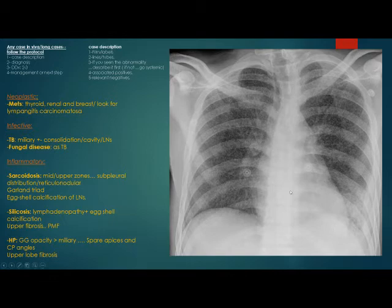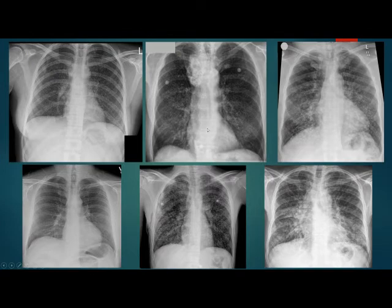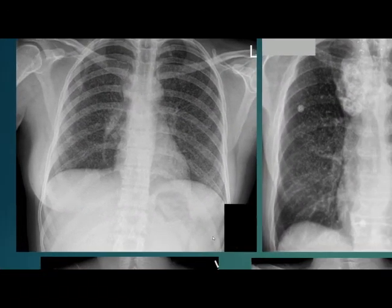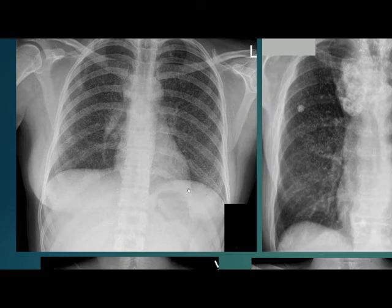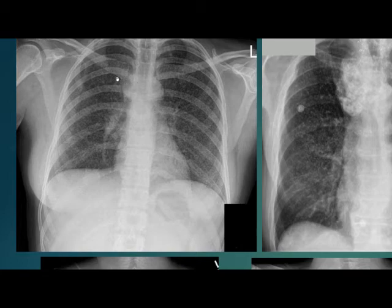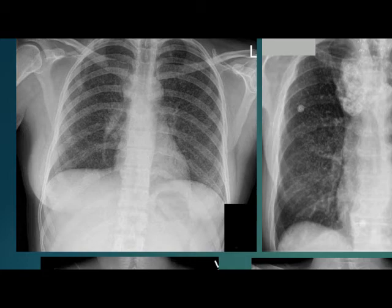Now let us see some examples. In this first image, we can see the miliary pattern. There is a mastectomy of the left breast. There are no axillary clips seen, but there are paratracheal lymph nodes. So the primary diagnosis should be metastasis from breast carcinoma. However, it also depends on the patient's clinical history — if the patient presents very ill with symptoms like night sweating, tuberculosis could still be a possibility.